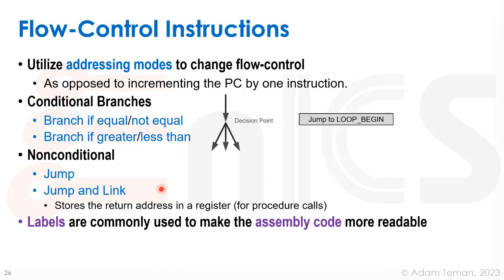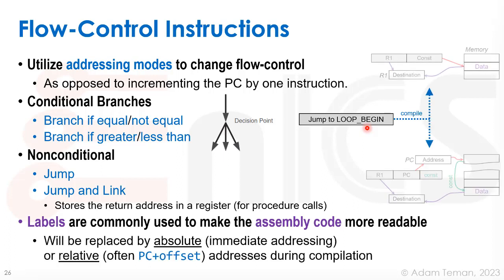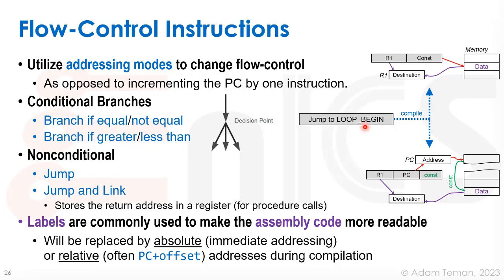For jumps and branches we use labels to make code more readable — for example, 'jump to loop_begin'. These labels are not binary; they are strings replaced by absolute or relative addresses during the compilation process. The compiler takes the label and turns it into binary code, making it as optimal as possible.